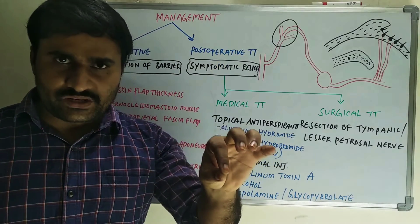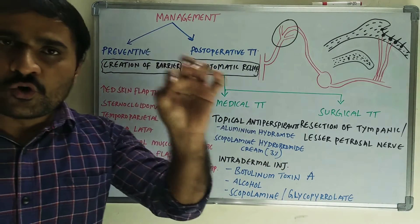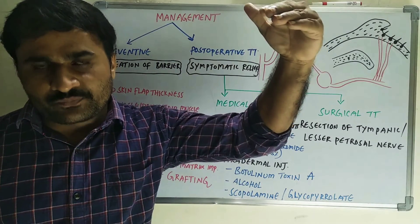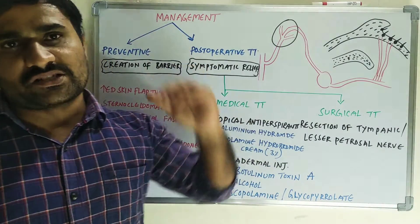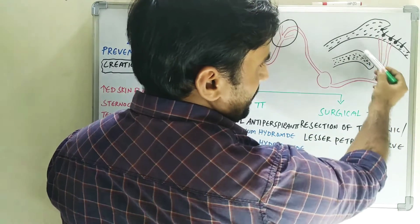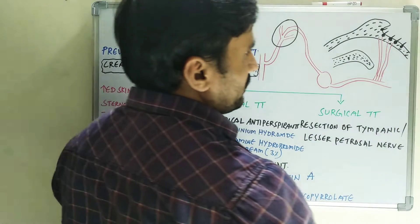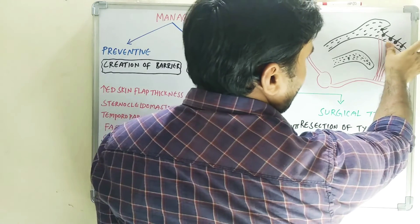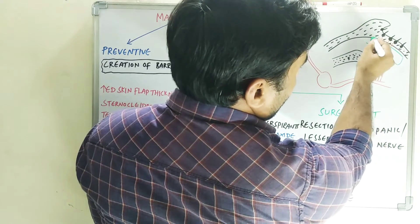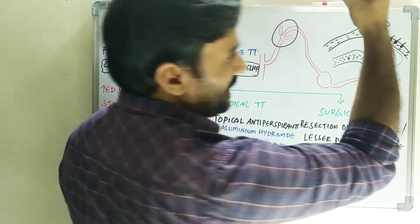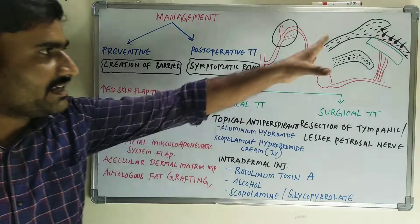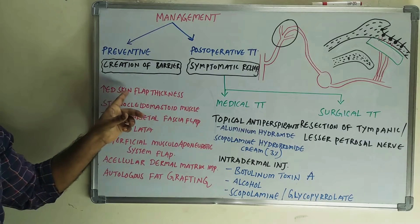Management can be divided into preventive measures and postoperative treatment. Preventive measures are done at the time of surgery. The main basic goal in preventive measures is to create a barrier between the cutaneous structure and the post-ganglionic parasympathetic fibers. You can see in this diagram: this is the skin and this is the removal of the parotid gland, so you have to create a barrier.